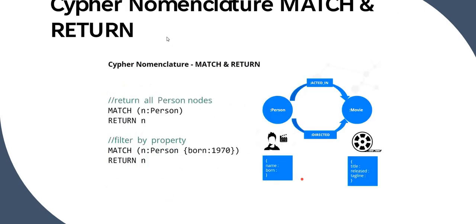Now let's look at the Cypher nomenclature for a basic match-and-return query. In the upcoming videos we'll do a practical session. Neo4j provides a built-in movie graph database with Person and Movie nodes. The relationship type between them is 'ACTED_IN' or 'DIRECTED'. In a query like 'MATCH (n:Person) RETURN n', nodes are in parentheses with a variable, a colon, and a label name. This returns all nodes labeled Person.